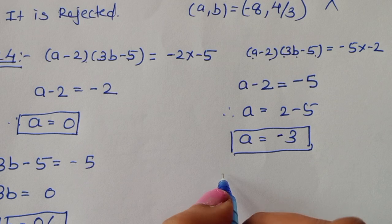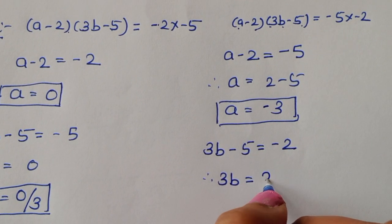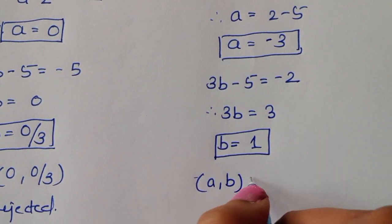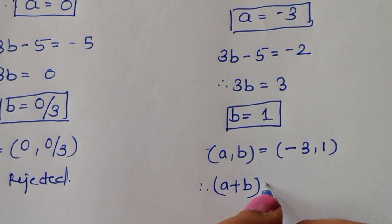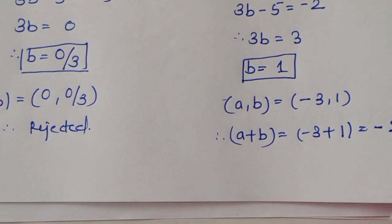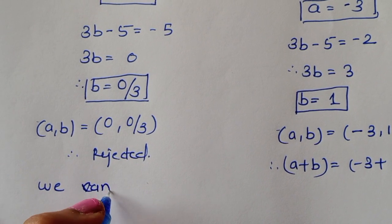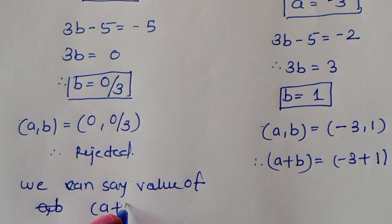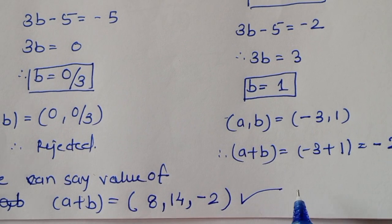Continuing the second subcase of Case 4: 3b − 5 = −2, so 3b = 3, giving b = 1. Thus (a, b) = (−3, 1) and a + b = −2. In summary, the valid integer solutions give a + b equal to 8, 14, and −2.